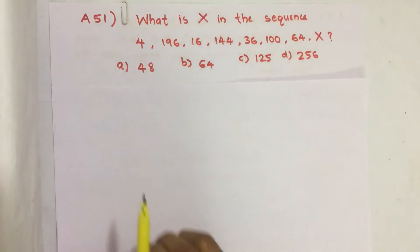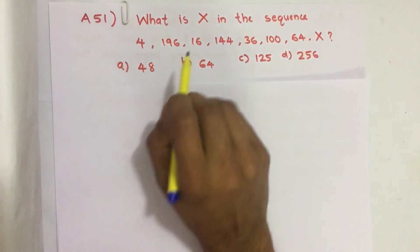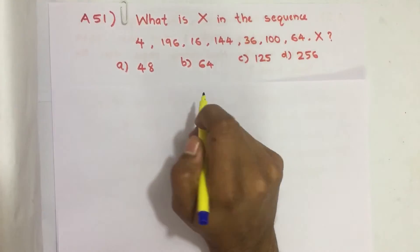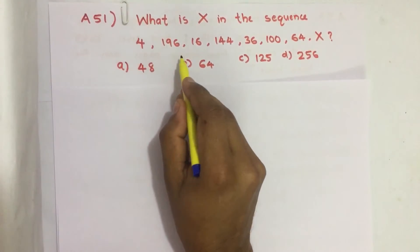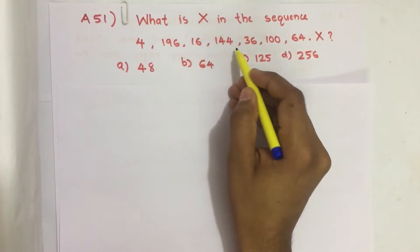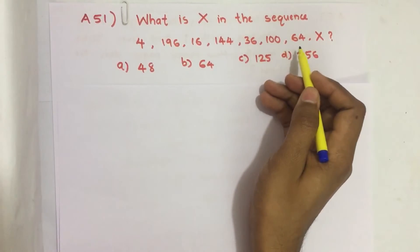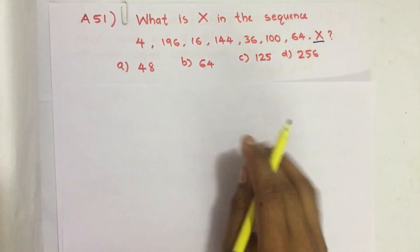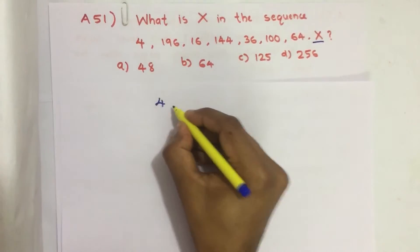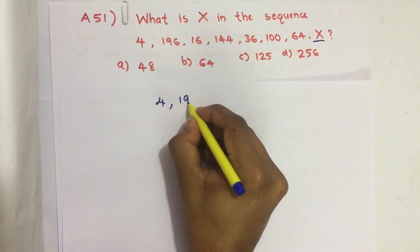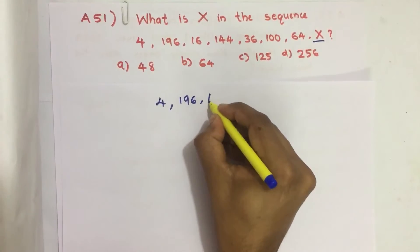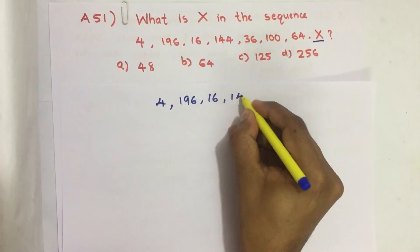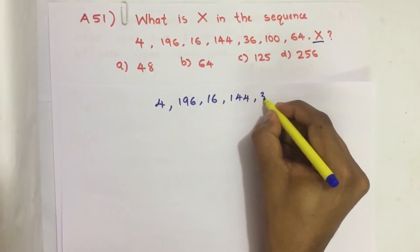2019 CSAT question number 51: What is X in the sequence 4, 196, 16, 144, 36, 100, 64, X? We have to find what is this X. Let me rewrite the sequence here: 4, 196, 16, 144, 36, 100, 64.